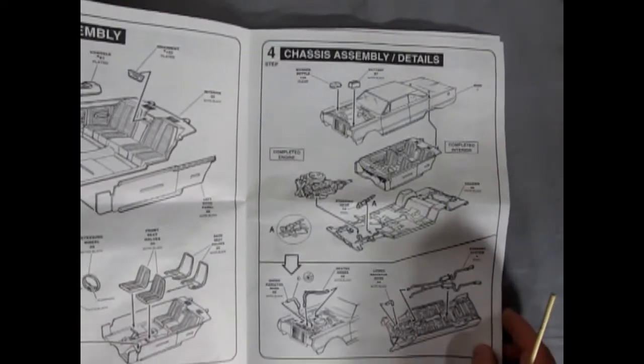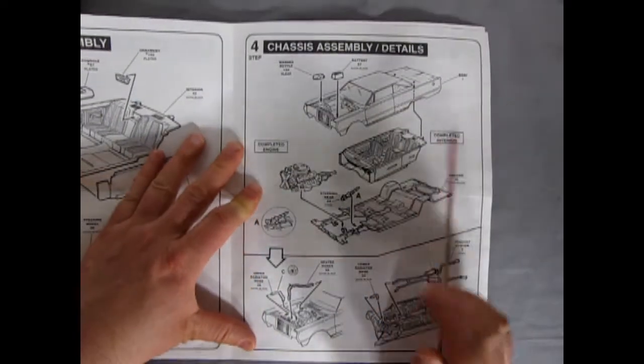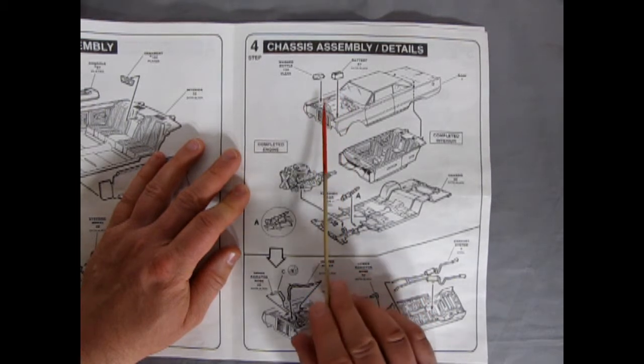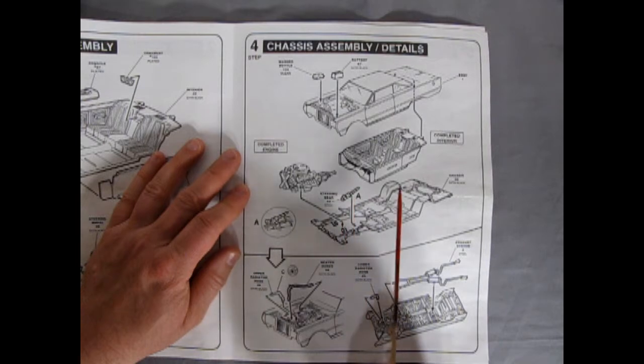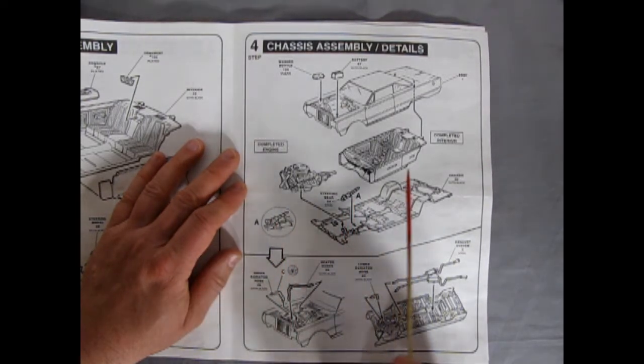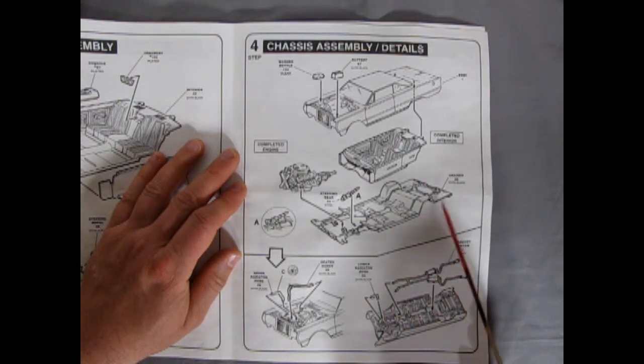And then we get into step four right here, which shows the chassis assembly details. So your battery drops in and your washer bottle. The completed engine will hook in. You've got a steering gear on your steering column. It shows you how to align it there. And then your interior and your body. Everything drops down onto the chassis.